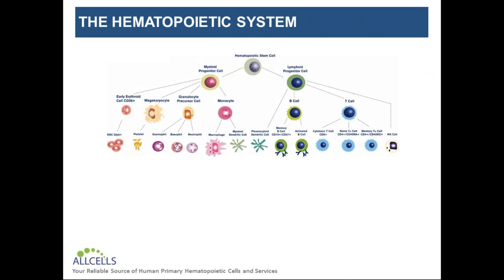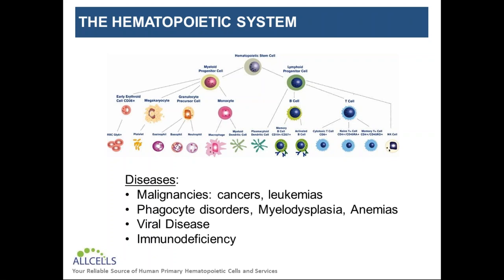Cells of the hematopoietic system are all derived from hematopoietic stem cells and mature in the bone marrow. The majority of terminally differentiated blood cells exist in varying percentages in the peripheral blood, but many of the myeloid and lymphoid progenitors are actually found exclusively in the bone marrow. Deviations from the hematopoietic lineage hierarchy can be indicative of many disease states, and there are many different diseases that can affect any number or combinations of these cells.